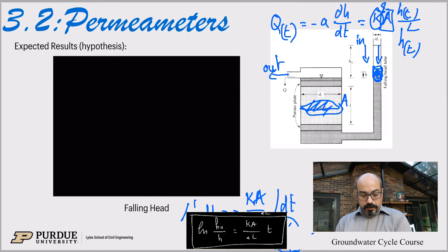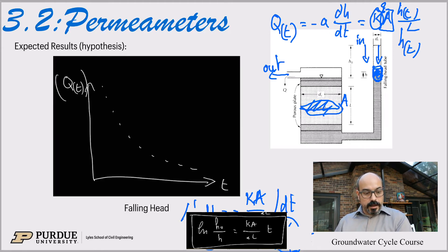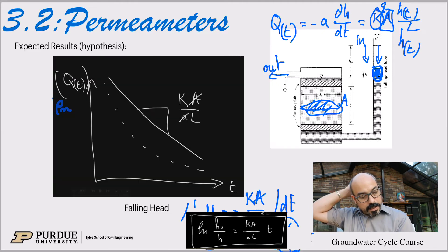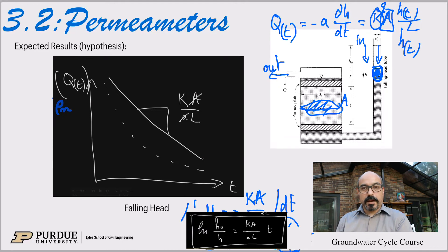So now we have a linear relationship in log space. This is the hypothesis: Q(t) is going to decrease non-linearly with time. If we take the log, we should have a slope equal to K over L, assuming the areas are the same. So now we have a hypothesis and we can go do experiments — that's exactly what Darcy did.